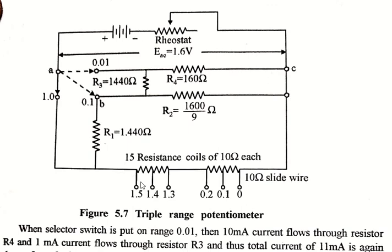When the selector switch is put on range 0.1, there are three parallel circuits connected between points A and C. The first circuit is a series circuit of resistor R1 and the measuring circuit of the potentiometer. The second circuit is R2, and the third one is again a series circuit of R3 and R4. So basically there are three circuits.